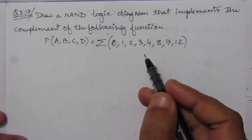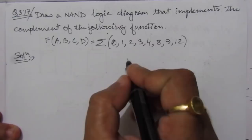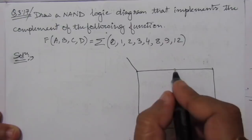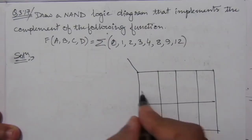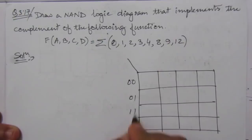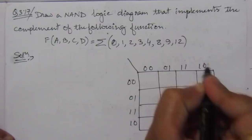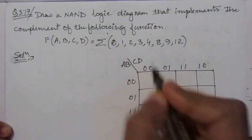We can see that we have four variables here, so we have to draw a four-variable map. In a four-variable Karnaugh map we will have four rows and four columns. The row ordering is 00, 01, 11, 10 and the column ordering is also 00, 01, 11, 10 — this is gray code mapping. We have variables A, B, C, D.